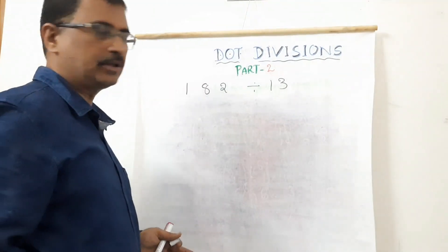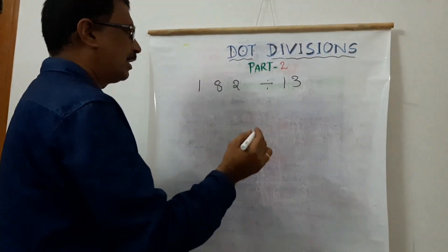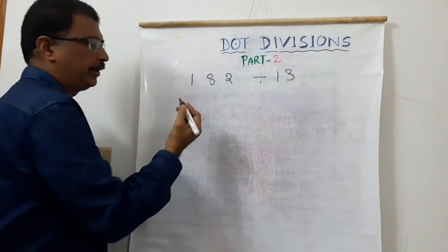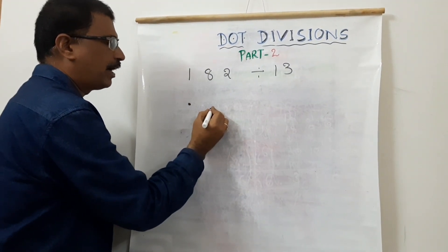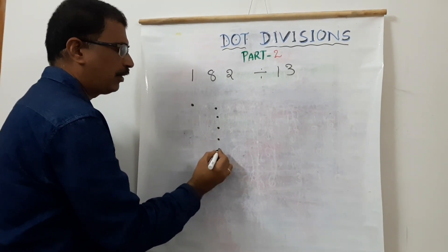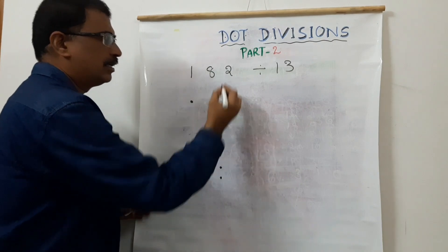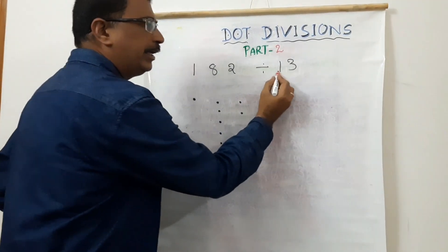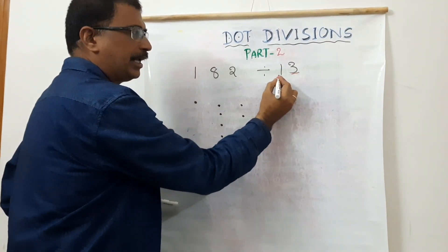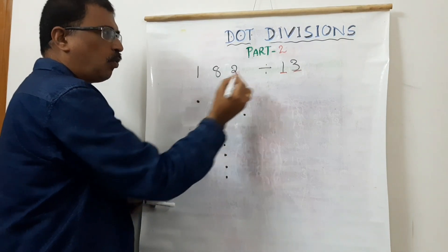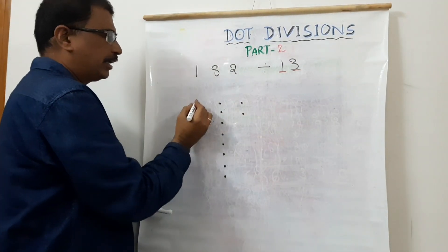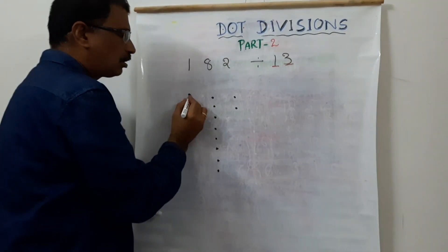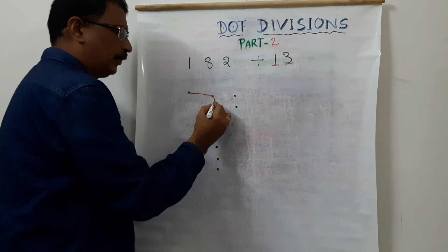We set up the problem. The units place, 10th place, and 100th place are identified. The 100th place is 1. The 10th place gets 8 dots — 1, 2, 3, 4, 5, 6, 7, 8 — and the units place gets 2 dots. So 182 is represented. For the divisor 13: units place is 3 dots, 10th place is 1 dot.